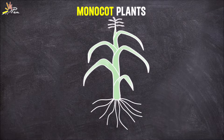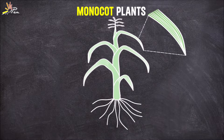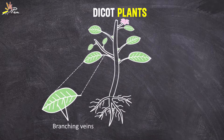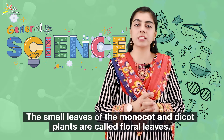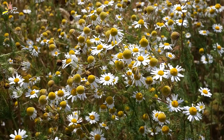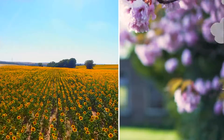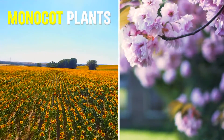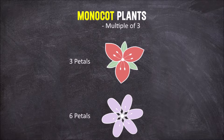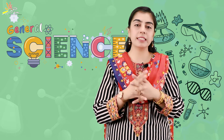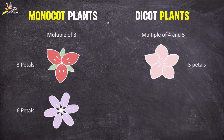A characteristic of monocot plants is that they are small in size and have parallel veins inside the leaf. The small leaves of monocot and dicot plants are called floral leaves. The floral leaves of a monocot plant will be three or a multiple of three, while dicot plants will have four or five floral leaves.